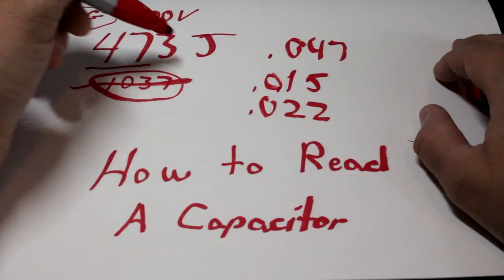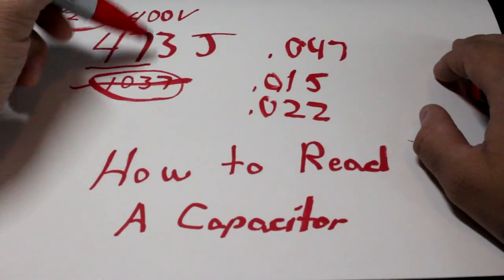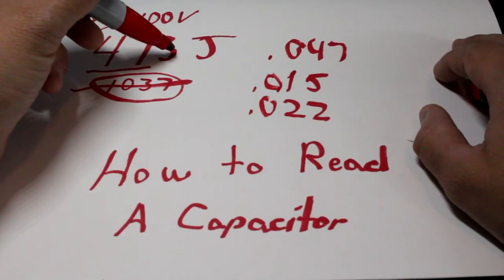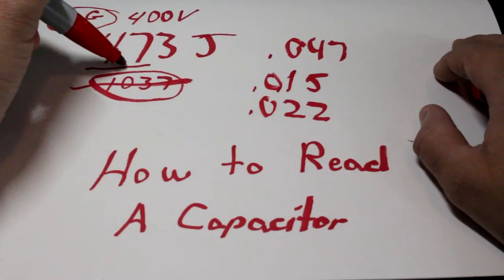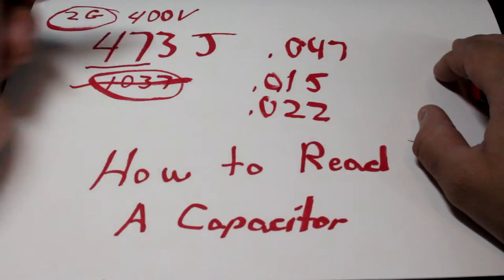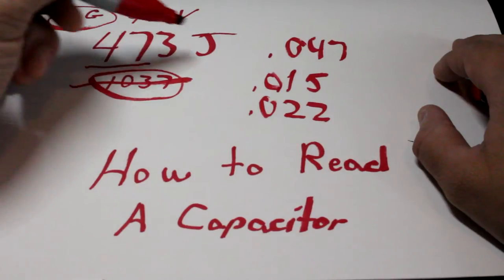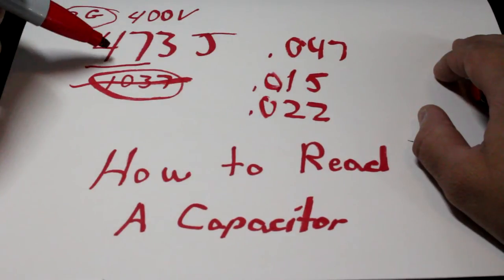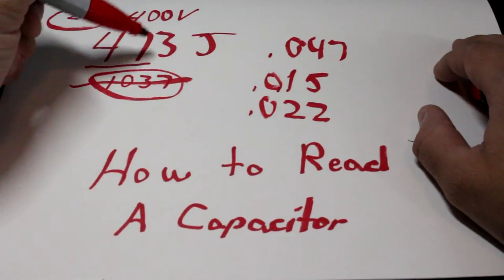So, 473 is going to be a 47, move the multiplier 3 this way, 1, 2, 3, a .047 capacitor. If this was a .015 capacitor, this would be 1, 5, 3.